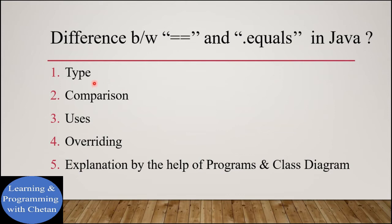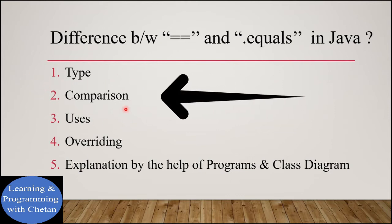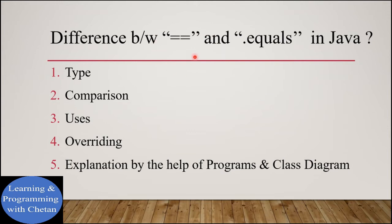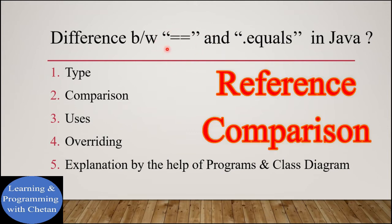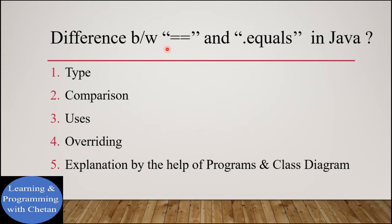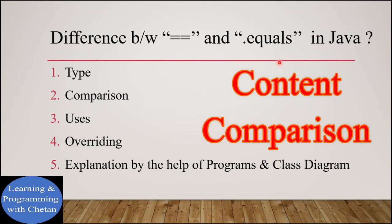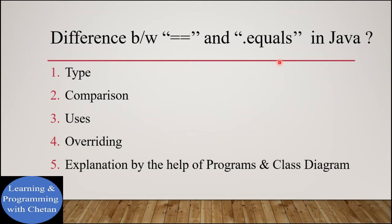Now let us understand our next difference on the basis of comparison. The double equals operator is used for reference comparison — it checks if both objects are pointing to the same location in memory. Whereas the dot equals method is used for content comparison, meaning it checks the values of both the objects.